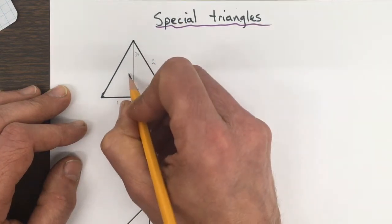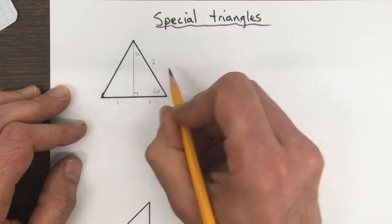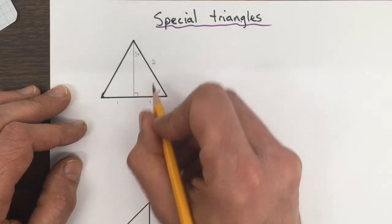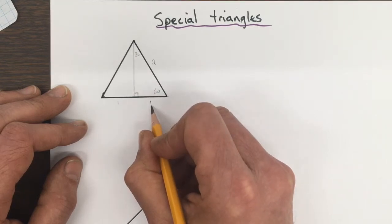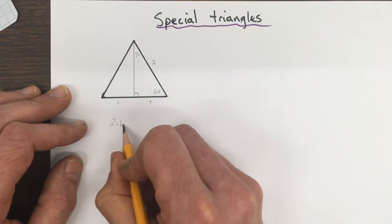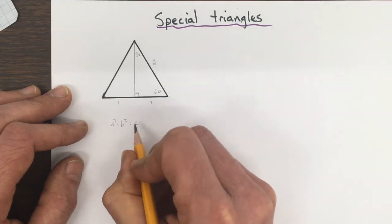So the height is going to be, using Pythagoras, 2 squared minus 1 squared. Alright, a squared plus b squared equals c squared.